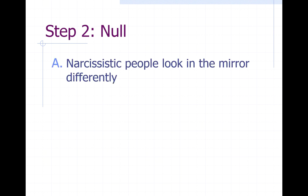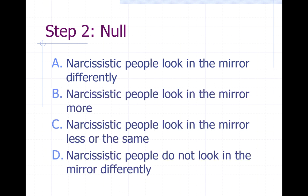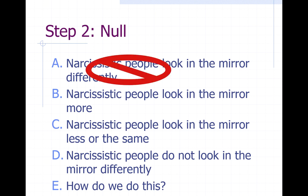Let's do step two and define our null hypothesis. The options are: narcissistic people look in the mirror differently; narcissistic people look in the mirror more; narcissistic people look in the mirror less or the same; narcissistic people do not look in the mirror differently. Try to figure out which options to cross off right away through process of elimination. 'Looking in the mirror differently' would never work because that implies a difference — we're looking for statements indicating things are the same.